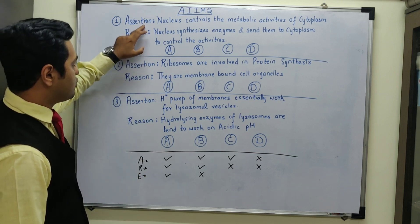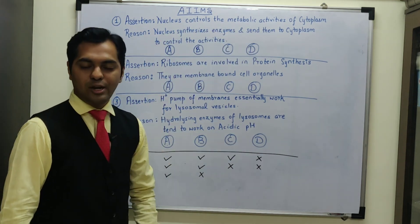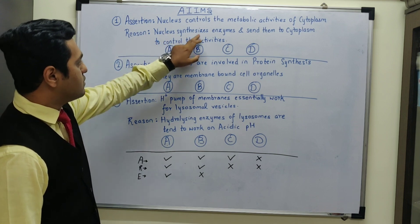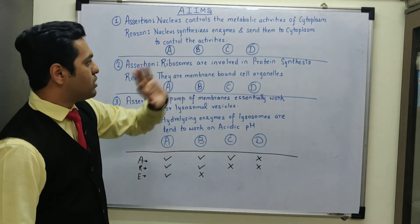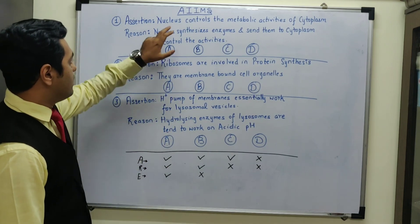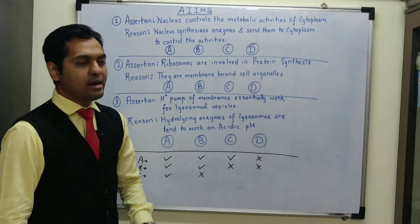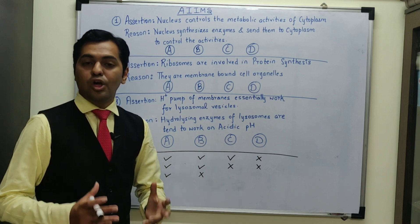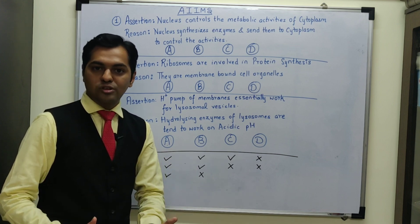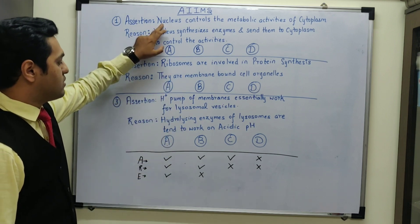The first MCQ: the assertion statement mentions that the nucleus controls the metabolic activities of cytoplasm, and the reason given is that the nucleus synthesizes enzymes and sends them to cytoplasm to control the activities. Now, is the assertion statement correct? Definitely yes — we call the nucleus the controlling center of the cell; it controls the entire cell. So the assertion statement is correct.